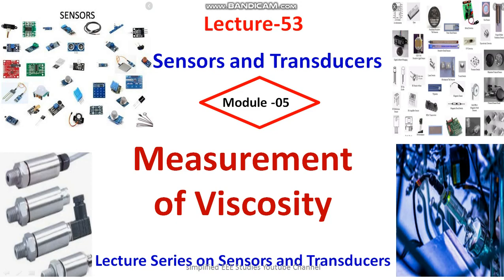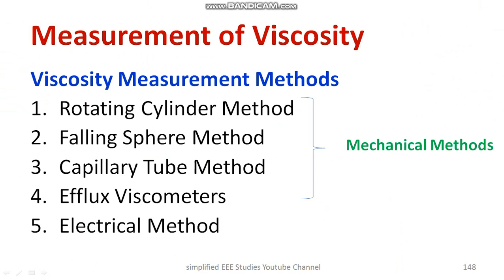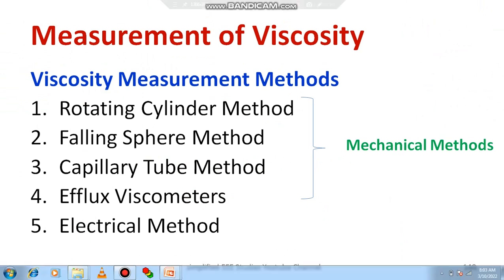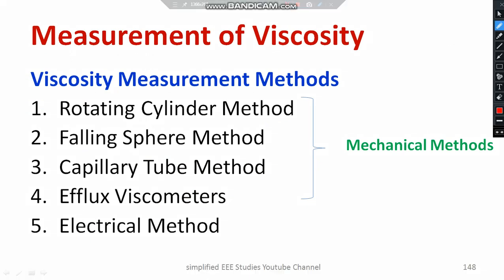In the last session, we discussed the importance of measurement of viscosity. As you can see, there are two major methods of measurement of viscosity: one is the mechanical method, and the other is the electrical method. Moving on to the mechanical methods, we have the rotating cylinder method, falling sphere method, capillary tube method, and efflux viscometers. For electrical methods, there are a few, and we will be discussing them individually.